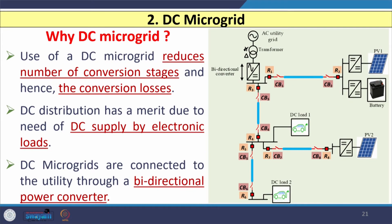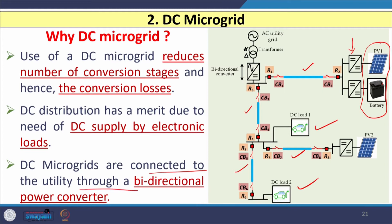Use of DC microgrid reduces the number of conversion stages. In the DC microgrid structure, the DC cables connect PV-based or battery-based generators through only DC-to-DC converters. Loads are directly connected since most electronic loads require DC supply, reducing conversion losses. DC microgrids are connected to the utility through a bidirectional power converter.